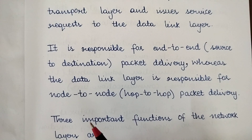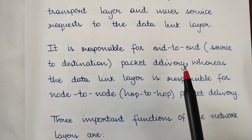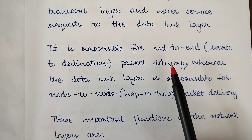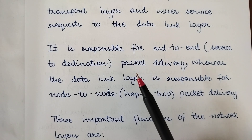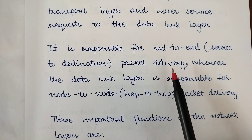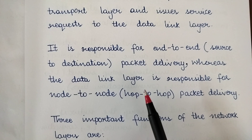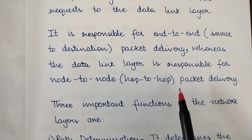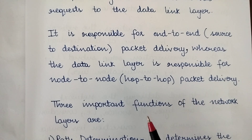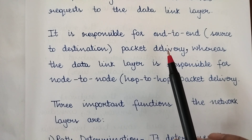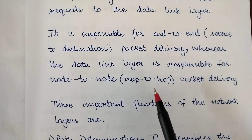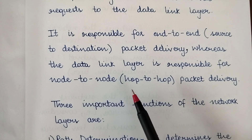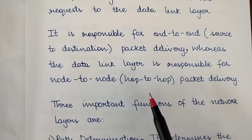The network layer is responsible for end-to-end services, meaning from source to destination — specifically packet delivery. The data link layer, on the other hand, is responsible for node-to-node, that is hop-to-hop, packet delivery. End-to-end means complete responsibility from the source to the destination, whereas node-to-node means responsibility only from one node to the next node in between.